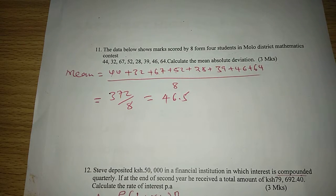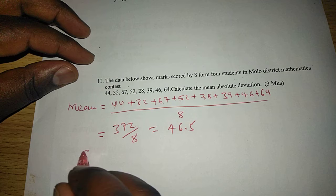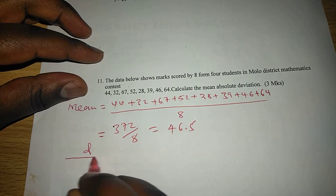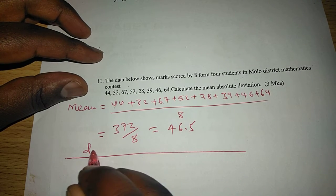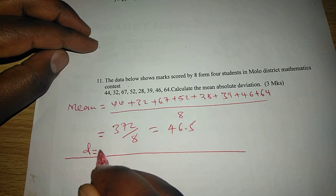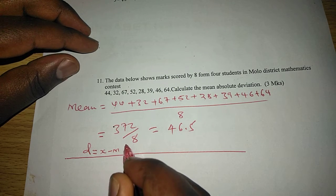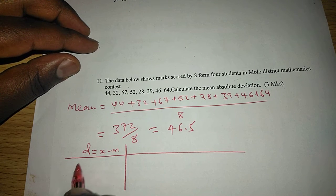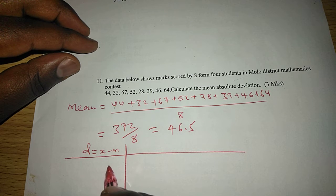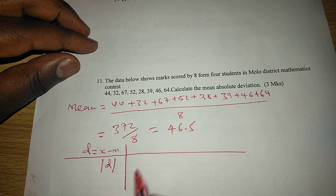So when we talk of absolute deviations, we can first of all get the deviations. The deviation is gotten by each value minus mean, how each value is deviating from mean. Then after that we get the absolute deviation.